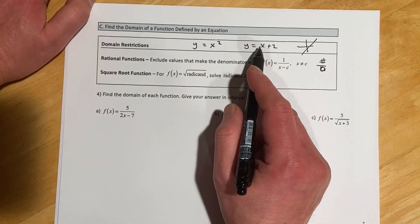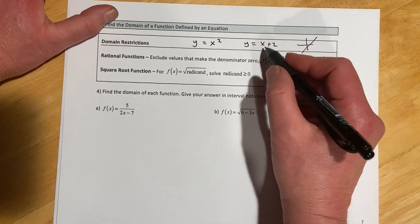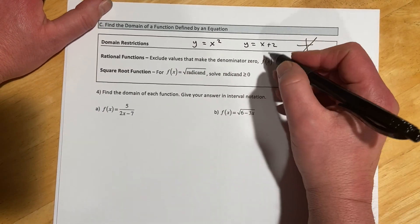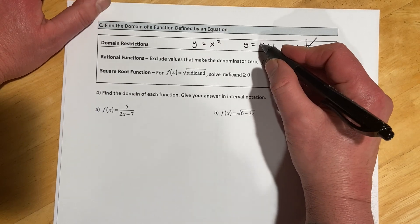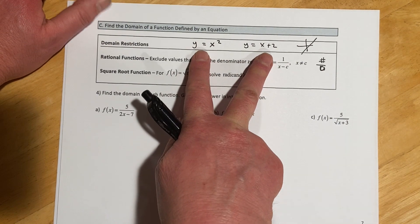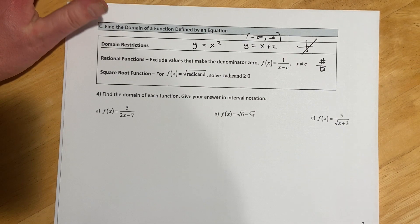So I wrote a couple up here of just a couple polynomials, a linear and a quadratic. And so if you think about these kinds of equations, you can put anything in for x, right? There's no issue. I can put negatives, positives, zero. These are all good. So for a polynomial, the domain for those is always all real numbers, or negative infinity to infinity.